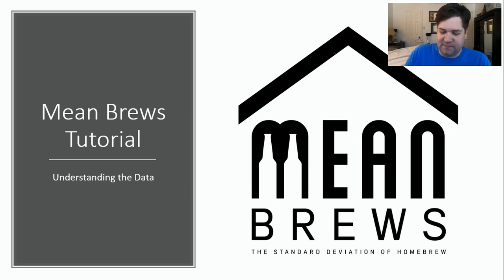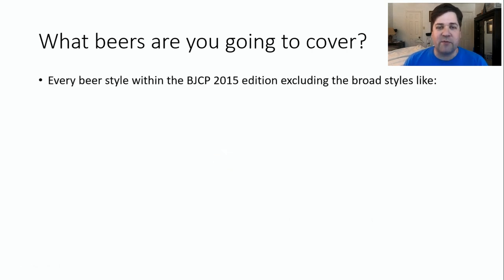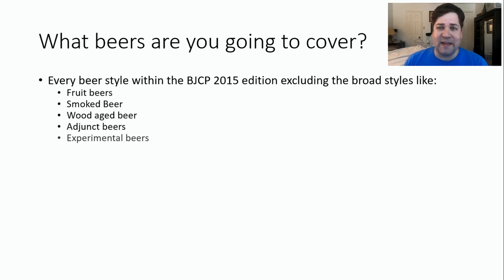This is the Mean Brews tutorial on understanding the data. We're going to cover every beer style in the 2015 edition of the BJCP. There are some styles we are going to exclude, which makes sense when I get into them — anything with vague ingredients like fruit beers that can be multiple styles, smoked beers that can use any different base style of beer, adjunct, wood age, experimental — those types of things where there's really no correlation between one recipe and another.